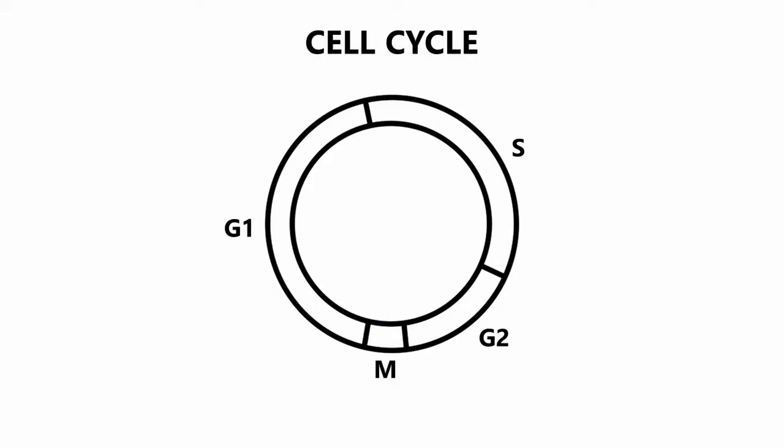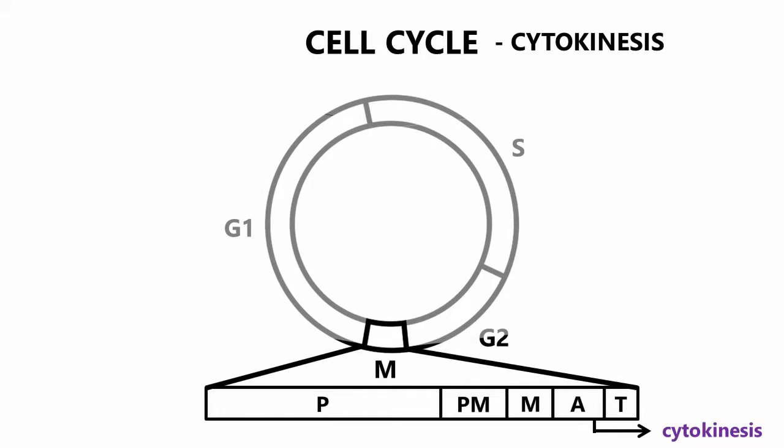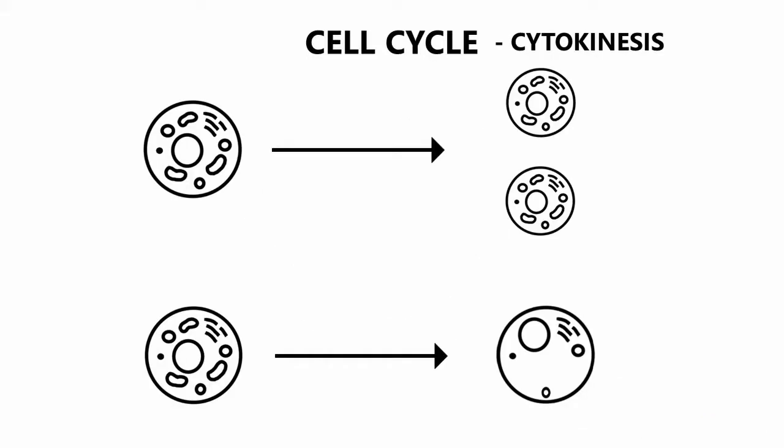The final step of the cell cycle is the division of cytoplasm, which occurs in late anaphase and is completed by the end of telophase. This step is present in most of the cells, but there are some that undergo mitosis without cytokinesis.